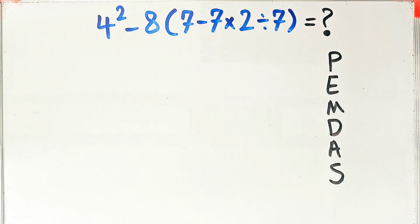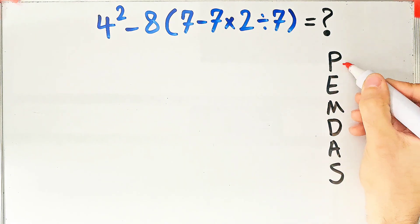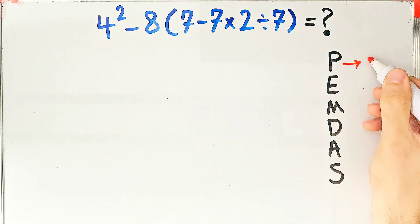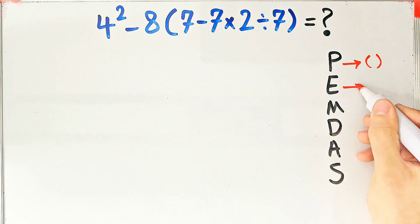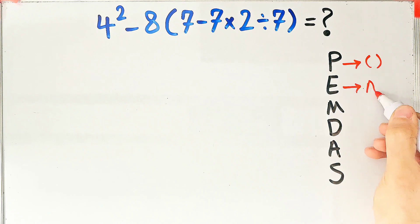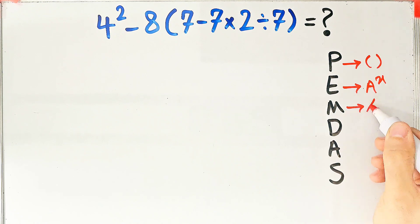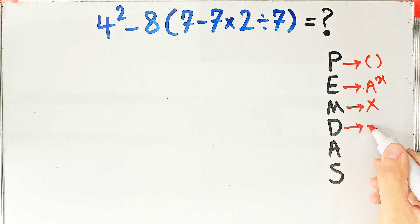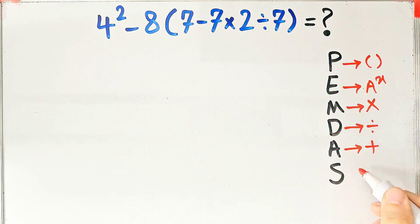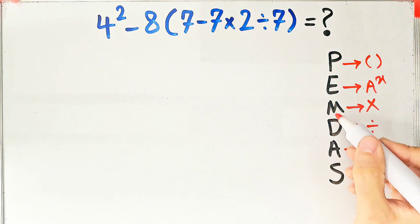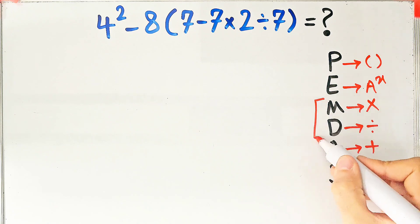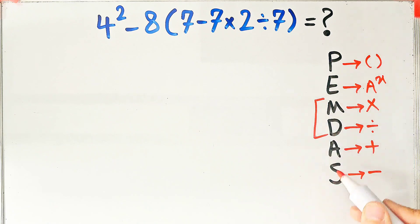In this rule, P stands for parenthesis, E stands for exponent, M stands for multiplication, D stands for division, A stands for addition, and S stands for subtraction. Multiplication and division have the same level of priority, and also addition and subtraction have the same priority.